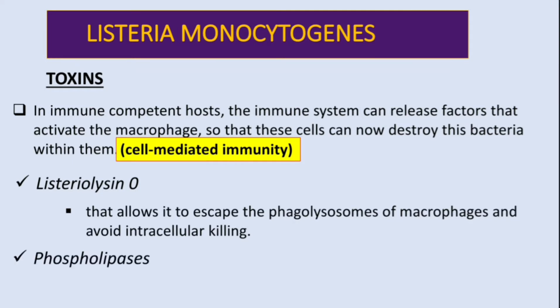The second group of toxins are enzymes called phospholipases. These are responsible for hemolysis — specifically beta hemolysis.